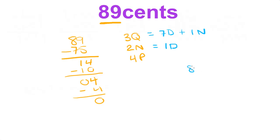Or you can convert this to 7 dimes and 1 nickel. So, all together you can have 8 dimes, 1 nickel, and 4 pennies. Another option if you don't have any quarters.